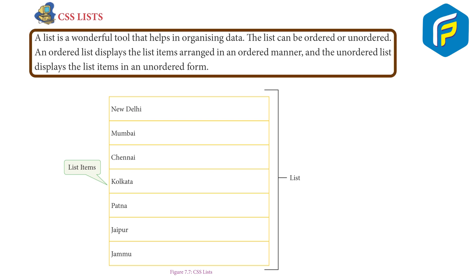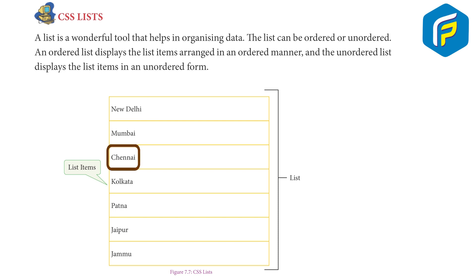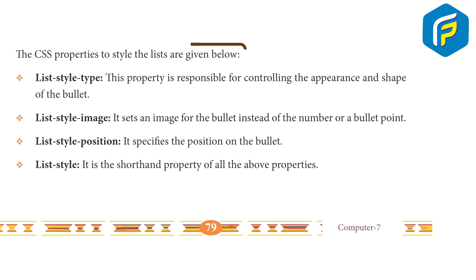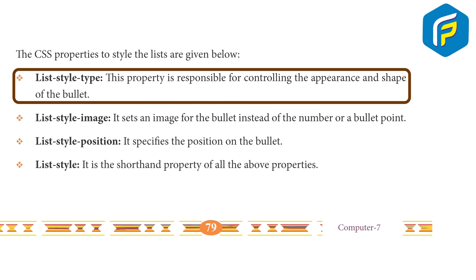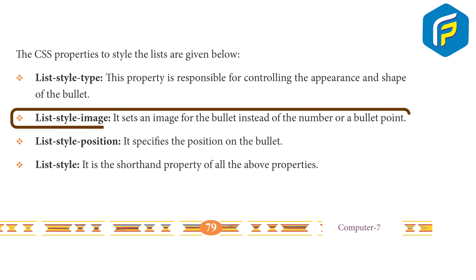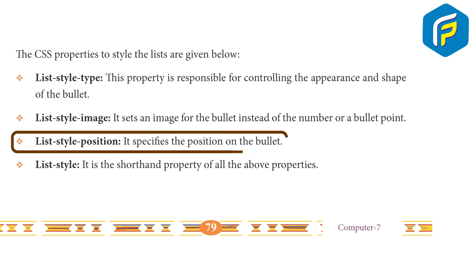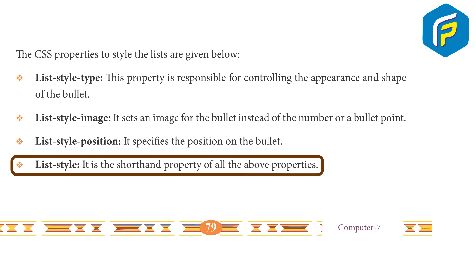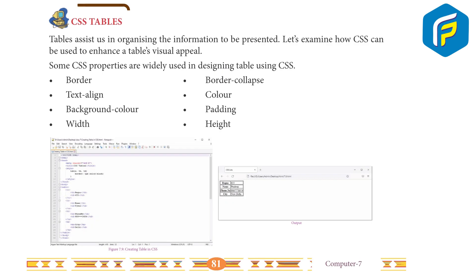CSS list: a list is a wonderful tool that helps in organizing data. This list can be ordered or unordered. An ordered list displays list items arranged in an ordered manner, and an unordered list displays list items in an unordered form. The CSS properties to style the list are: list-style-type — controls the appearance and shape of the bullet; list-style-image — sets an image for the bullet instead of a number or bullet point; list-style-position — specifies the position of the bullet; and list-style — the shorthand property for all of the above.